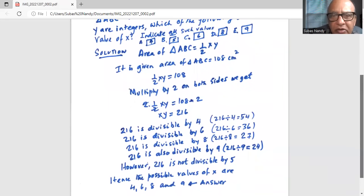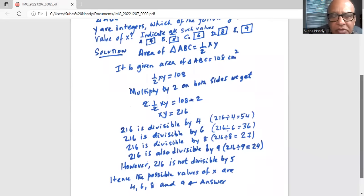Option b is not the correct option because b is 5 and 216 cannot be divided by 5. And the answer will not be an integer. Hence, the correct answers are a, c, d, and e.